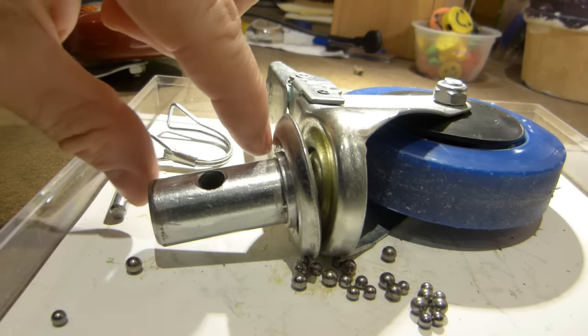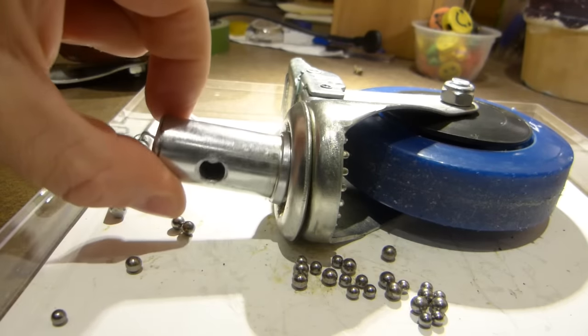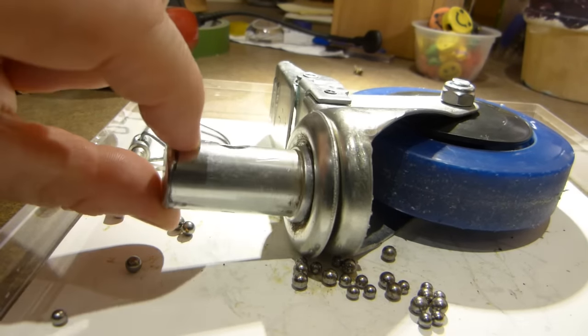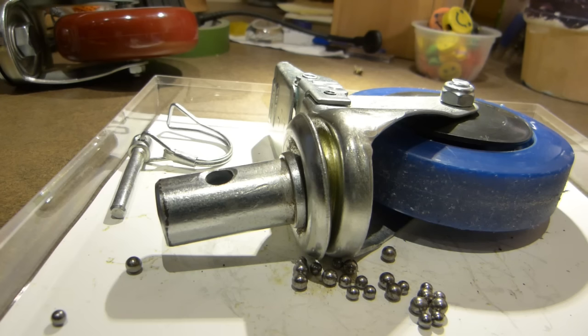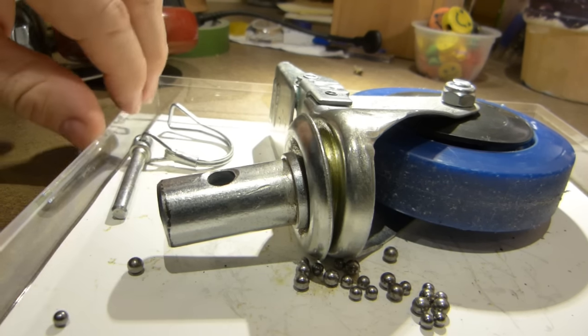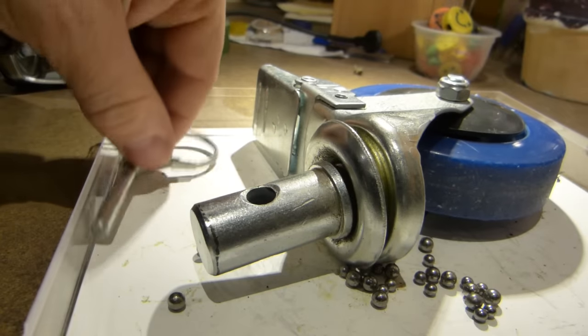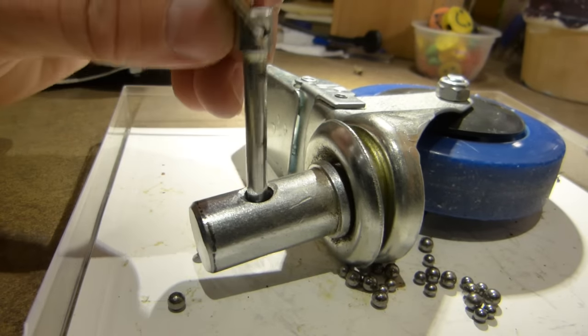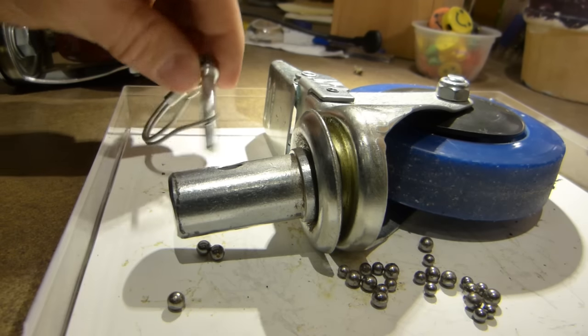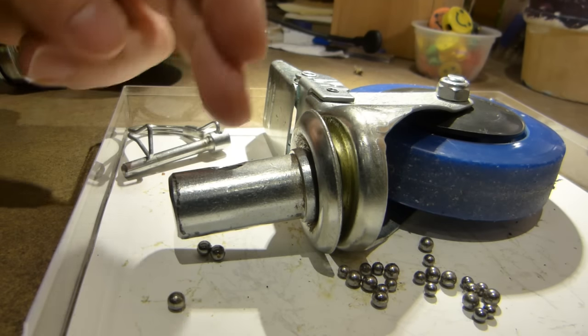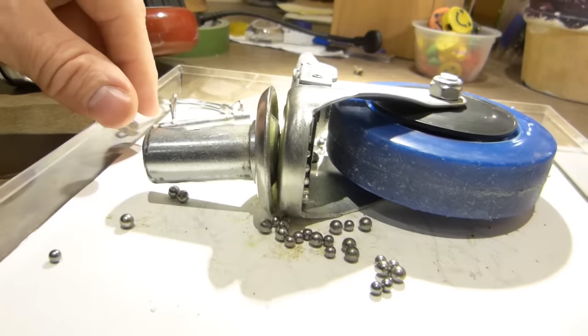This part of the caster here, this dowel end, is made to be inside a tubular scaffold frame. Inside the scaffold frame's end, it's held in place by this pin. And that's how it is in place in operation. This pin goes through the metal frame as well as this dowel.